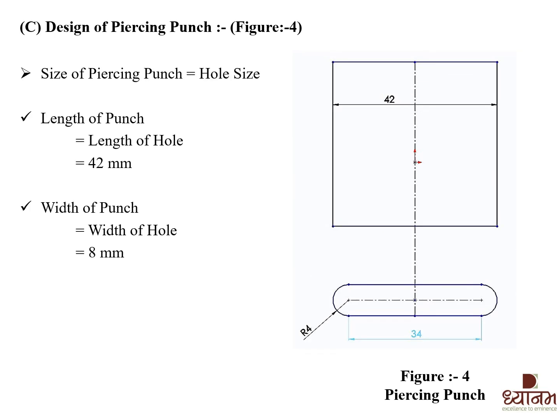For step three, the design of piercing punch: the size of the piercing punch equals the hole size. Length of punch equals length of hole — from the given component this is 34 mm plus radius of 4 mm on both sides, giving 42 mm. Width of punch equals width of hole; with a radius of 4 mm, the width of the hole is 8 mm. This is how we design the compound die, covering blanking punch, blanking die, piercing punch, and piercing die.